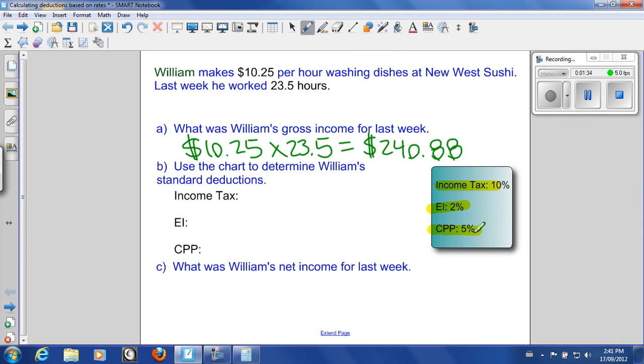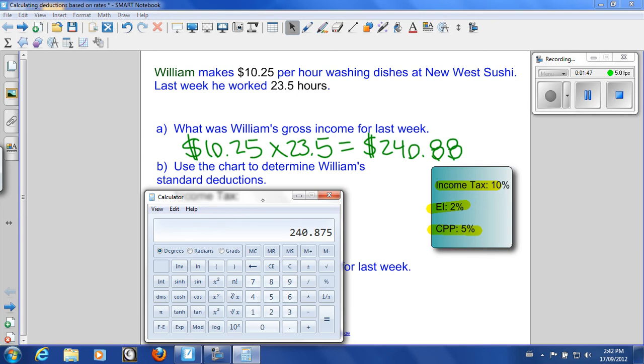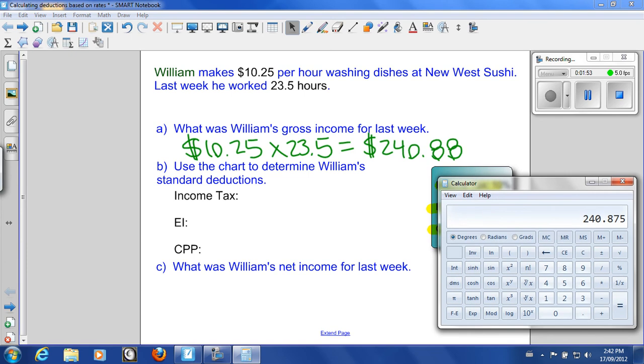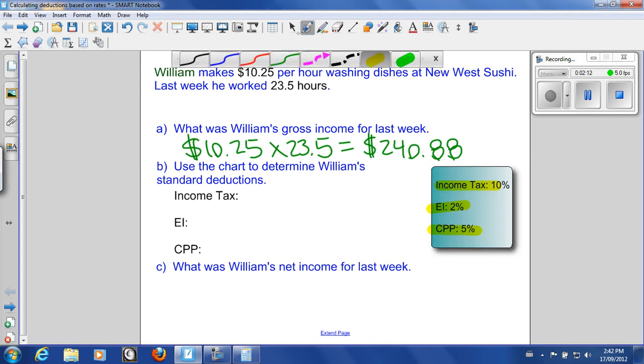So how much income tax will William pay on $240.88 gross? Well 10% of that, you can choose to use a calculator if you wish but we just have to move the decimal place once. Let's show you on the calculator. Remember that if we are calculating 10% we need to take that 10 and first divide by 100 to get the decimal value, that's 0.1, and we're going to multiply that by the $240.88. What do we get? We get $24.09 if we round that.